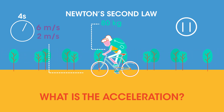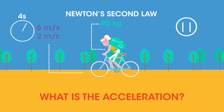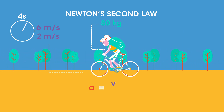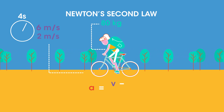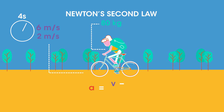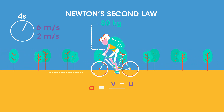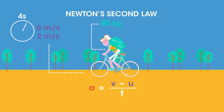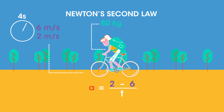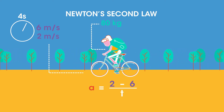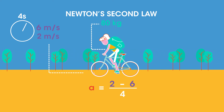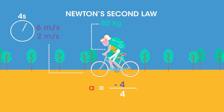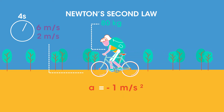Pause the video and think. Acceleration a equals final velocity v minus initial velocity u over time taken. So acceleration equals 2 minus 6 over 4, or minus 4 over 4, or minus 1 meter per second squared.